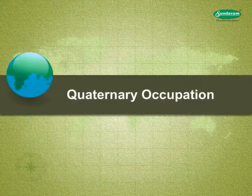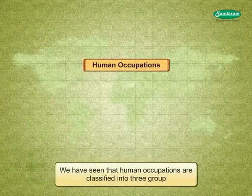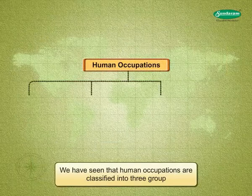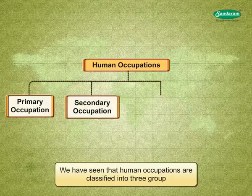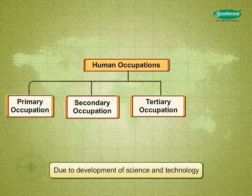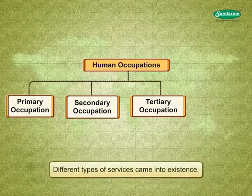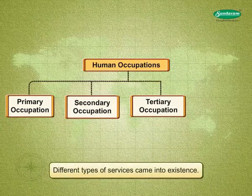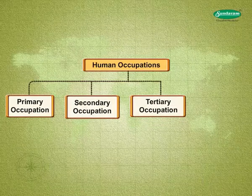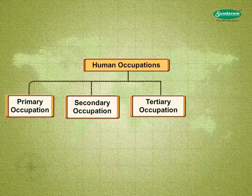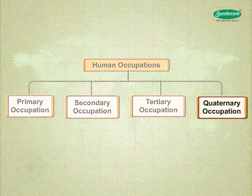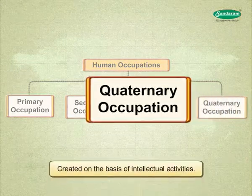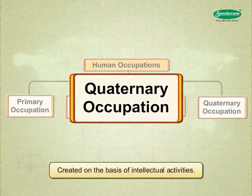Quaternary Occupation. We have seen that human occupations are classified into three groups: Primary, Secondary and Tertiary. Due to development of science and technology, different types of services came into existence. That is why there was a need to add one more group, that is, Quaternary Occupation. These are special services created on the basis of intellectual activities.